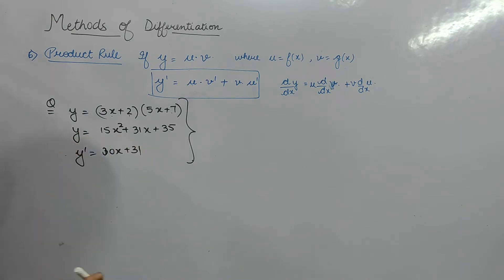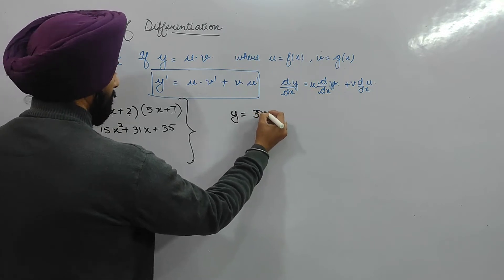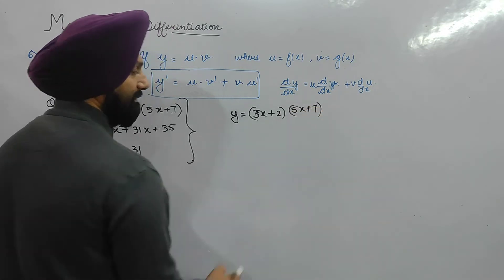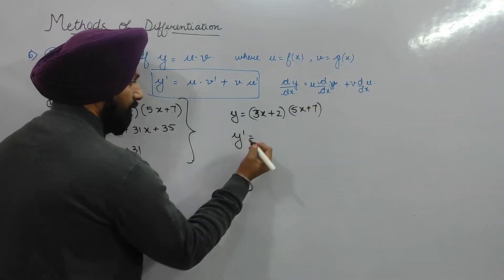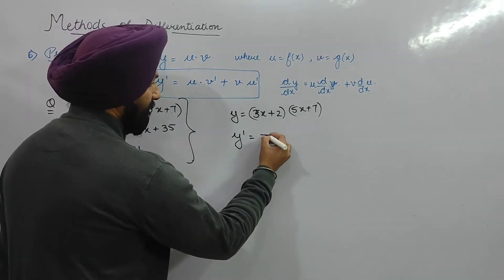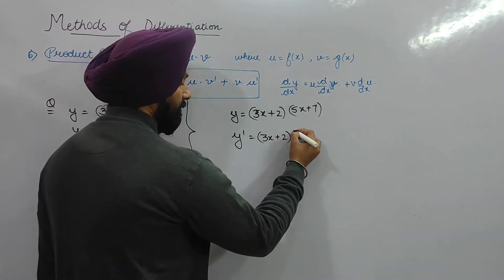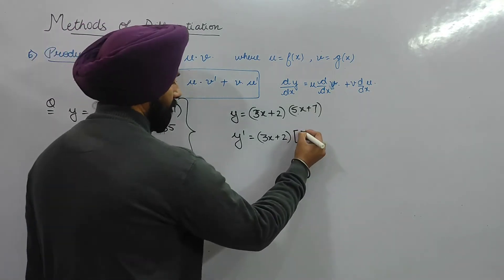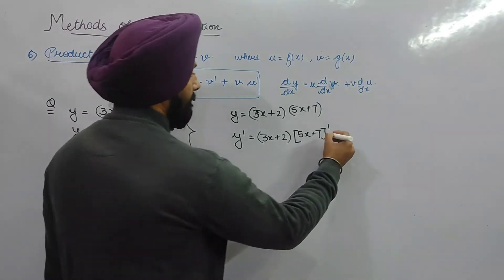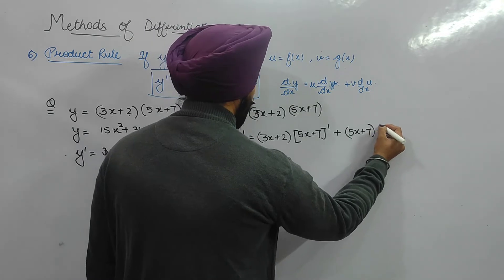Now let's apply the product rule to y = (3x + 2)(5x + 7). Y dash equals first function (3x + 2) into derivative of second (which is 5), plus second function (5x + 7) into derivative of first (which is 3).